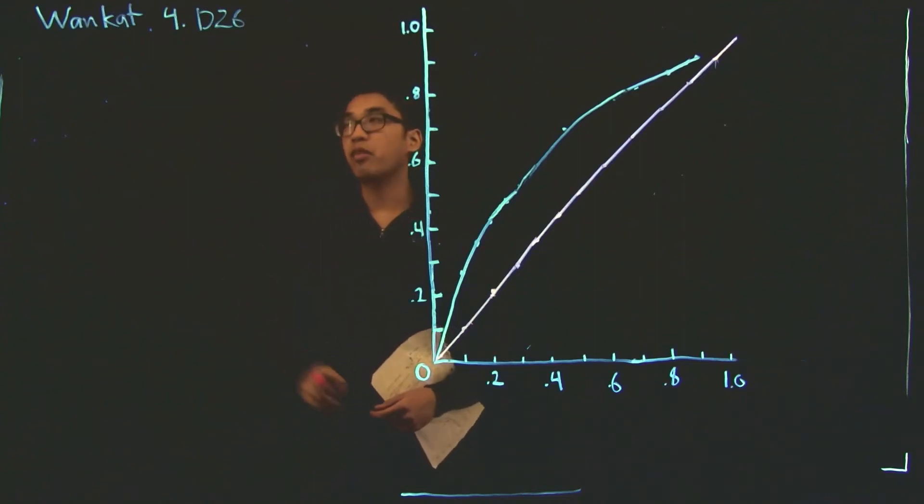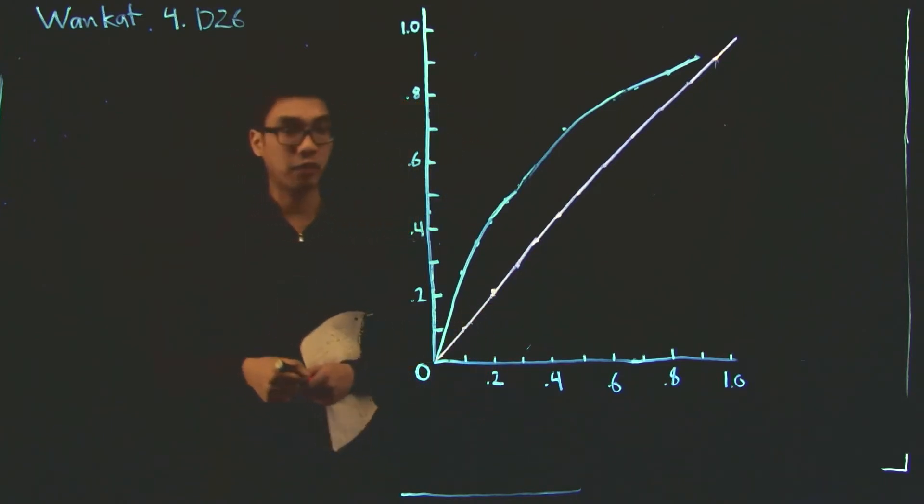Now we're going to discuss a very interesting problem, WineCat 4.d26. And as always, we have a distillation column, which I'm going to draw.